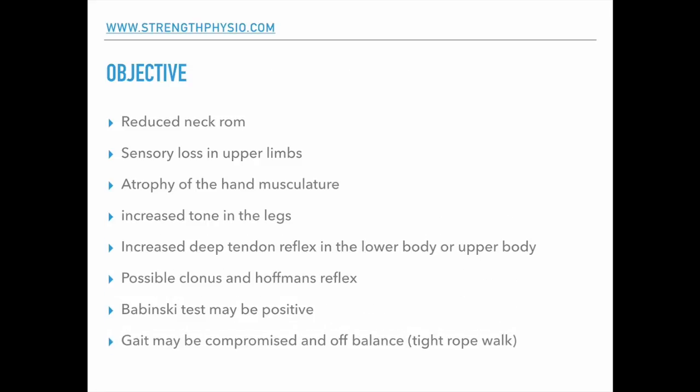Also look at gait - whether it looks normal or compromised. Gait could be normal in people with early signs of cervical myelopathy, so you could do things like a tightrope walk to make gait more challenging. You're trying to put the whole picture together - subjective and objective - you're not going to take any one test and say that's the cervical myelopathy; it's about putting all the pieces together.